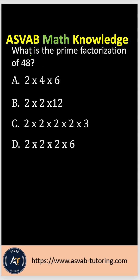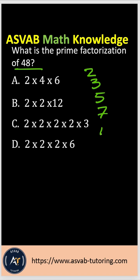The question asks: what is the prime factorization of 48? That means you have to write 48 in terms of prime numbers. Prime numbers are numbers you can only divide by 1 and themselves. The prime numbers are 2, 3, 5, 7, 11, and so on. You have to write 48 in terms of those numbers.